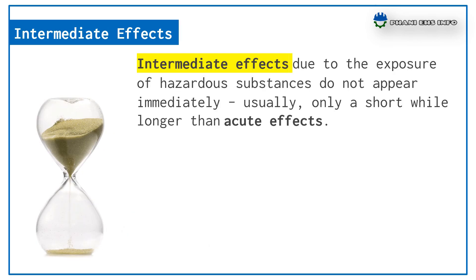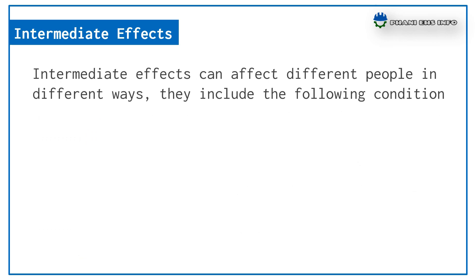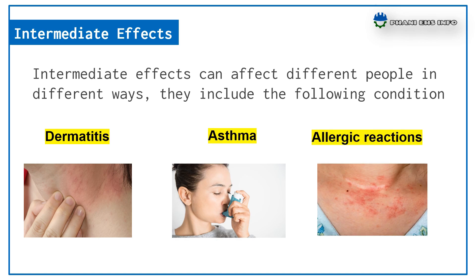The second type is intermediate effects. Intermediate effects due to exposure of hazardous substances do not appear immediately — usually only a short while longer than acute effects. The effects of exposure can stay with an individual for a long time, but symptoms usually stop when contact stops. Intermediate effects can affect different people in different ways and include conditions such as dermatitis, asthma, and allergic reactions.